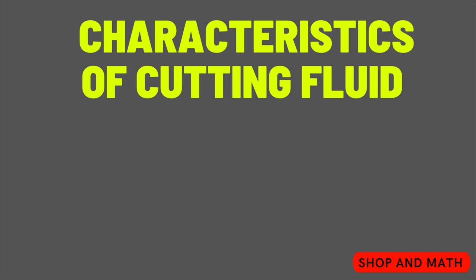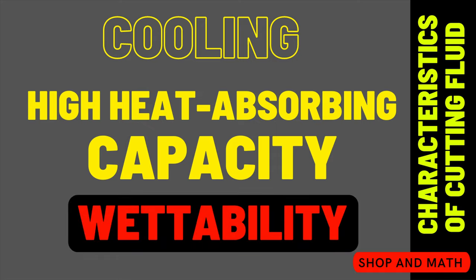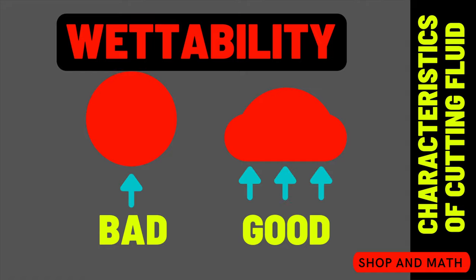Characteristics of cutting fluid — cooling: high heat-absorbing capacity. This is achieved through wettability. If we take a look at the left side, that's a water molecule or droplet that's round. If we take a look at the right side, that's one that flattens out. In this example, let's pretend that the arrows represent the amount of heat transfer from one area to the actual water droplet.